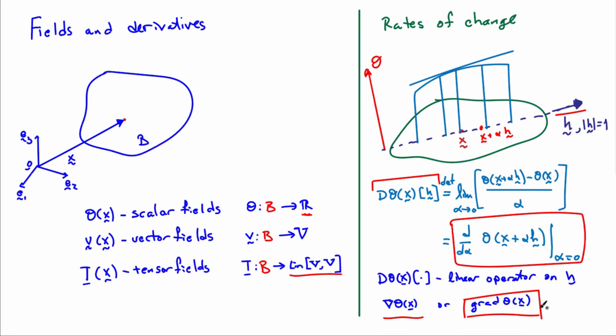And so this allows you to, in a compact way, compute all the rates of changes of theta in all directions h. So you calculate the gradient of theta and then you just apply it to whatever direction you want. This first way of doing it gives you the rate change in a particular direction h. But if you can separate h out from that relationship, then you're left with the gradient.